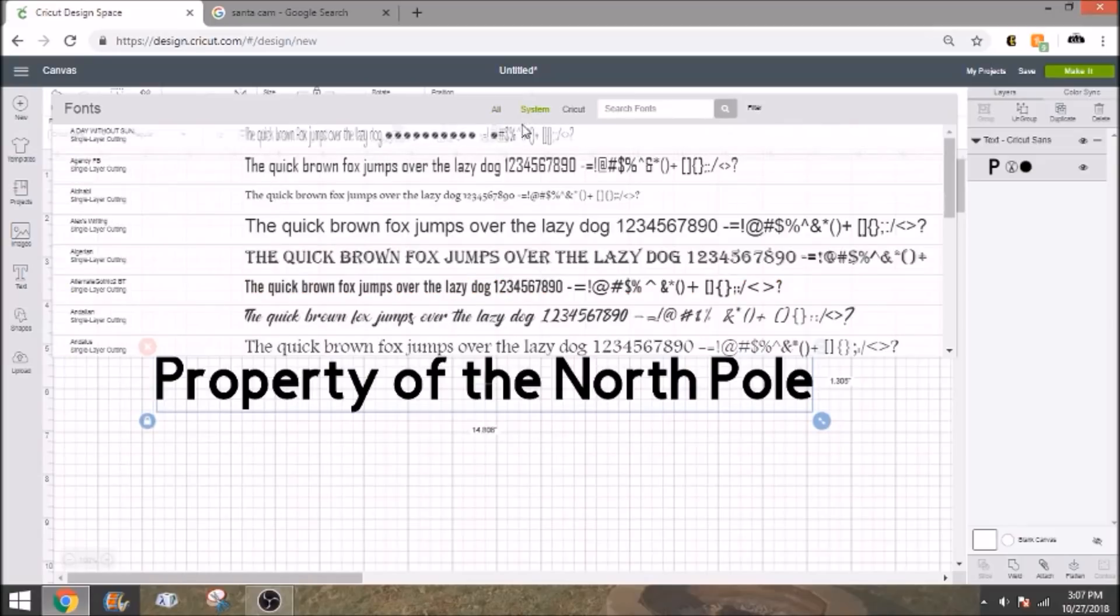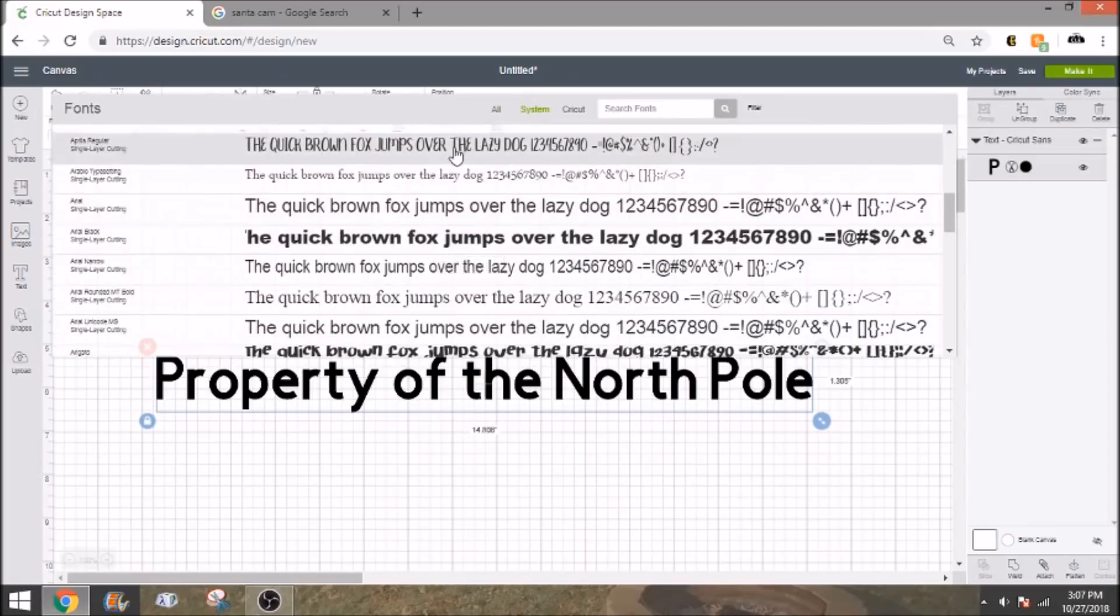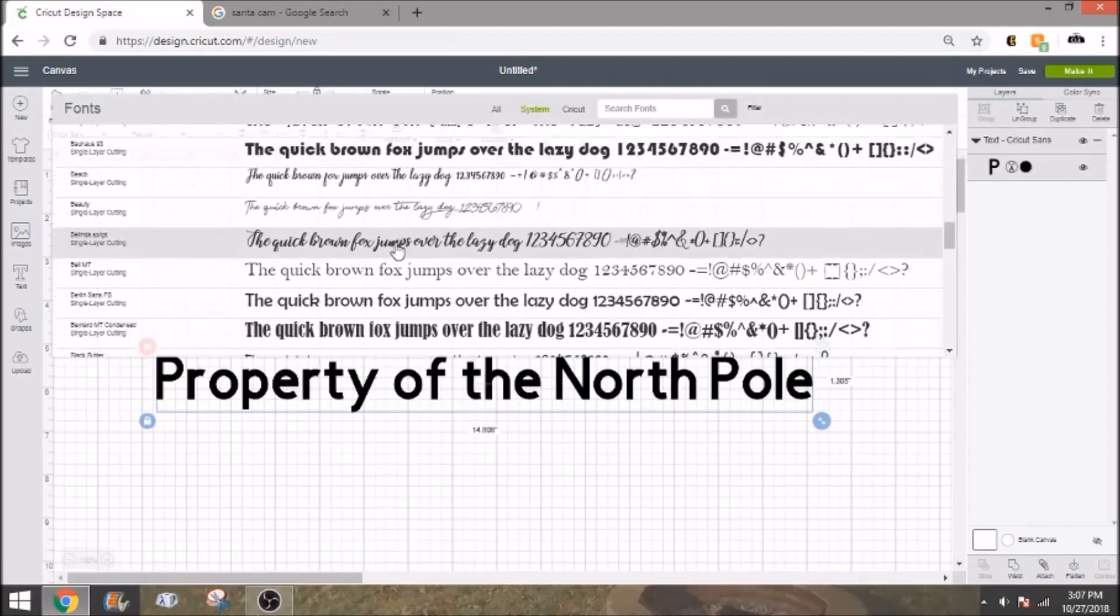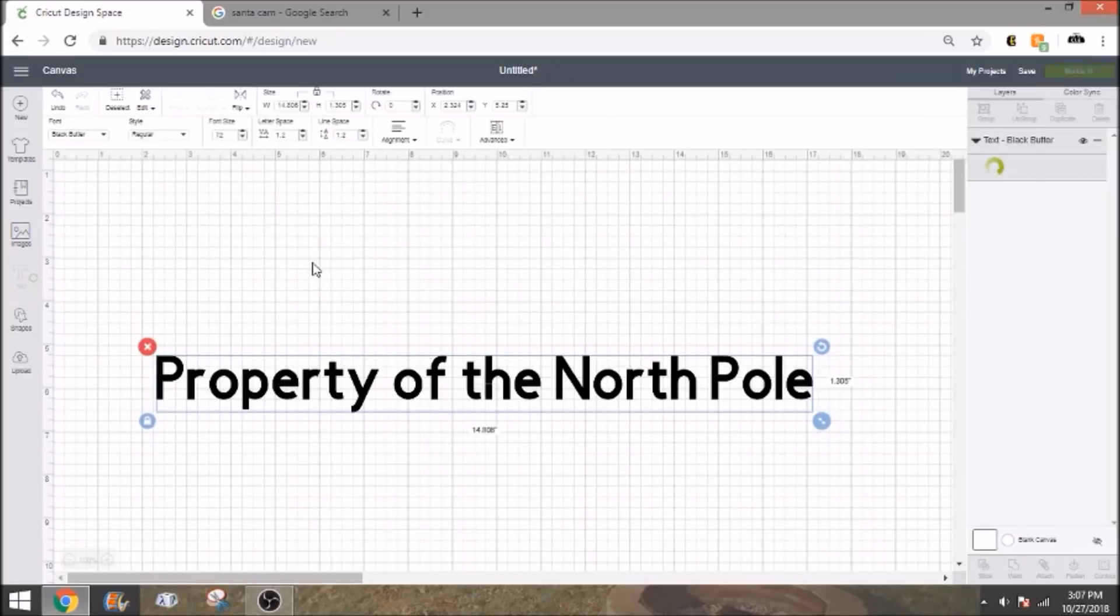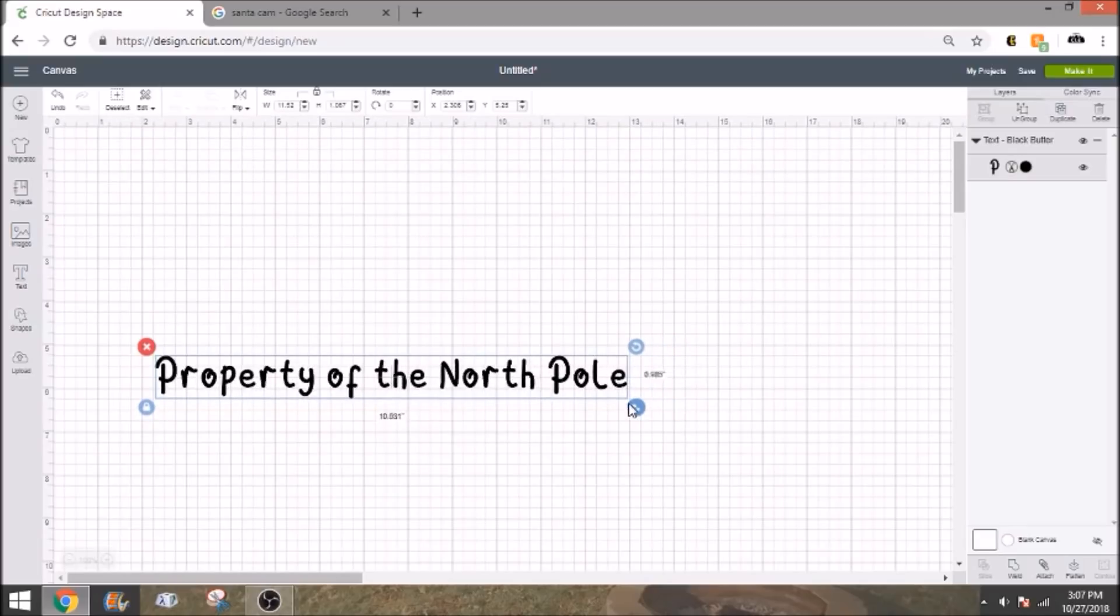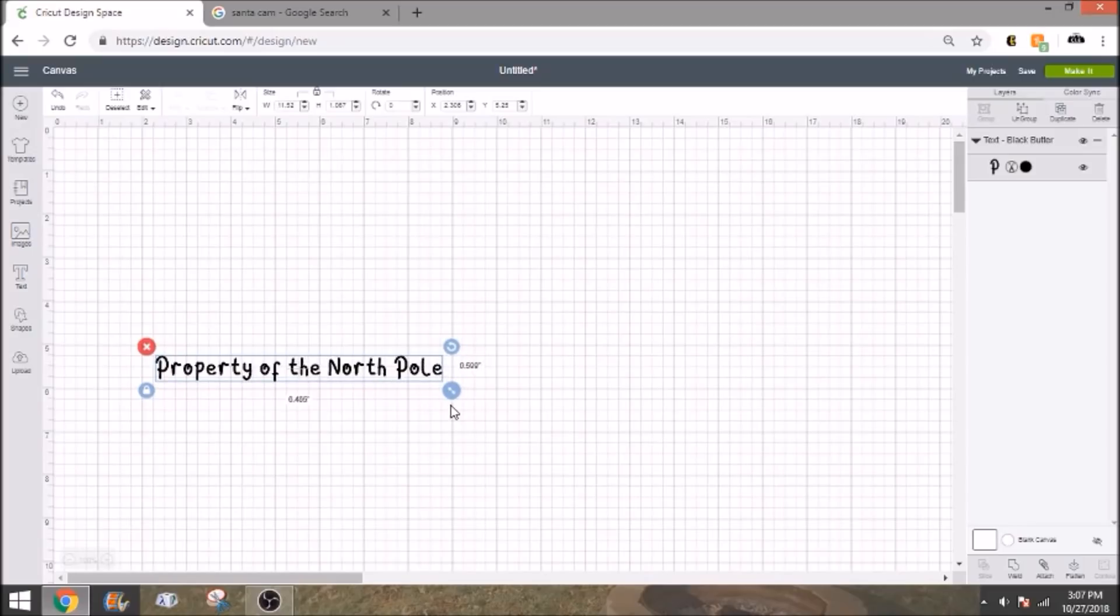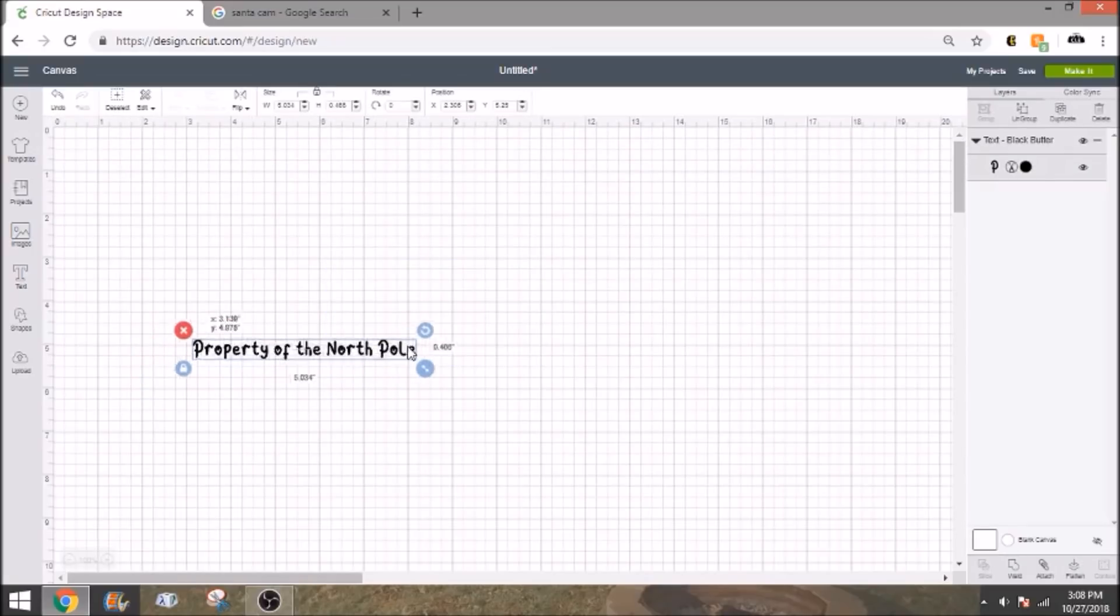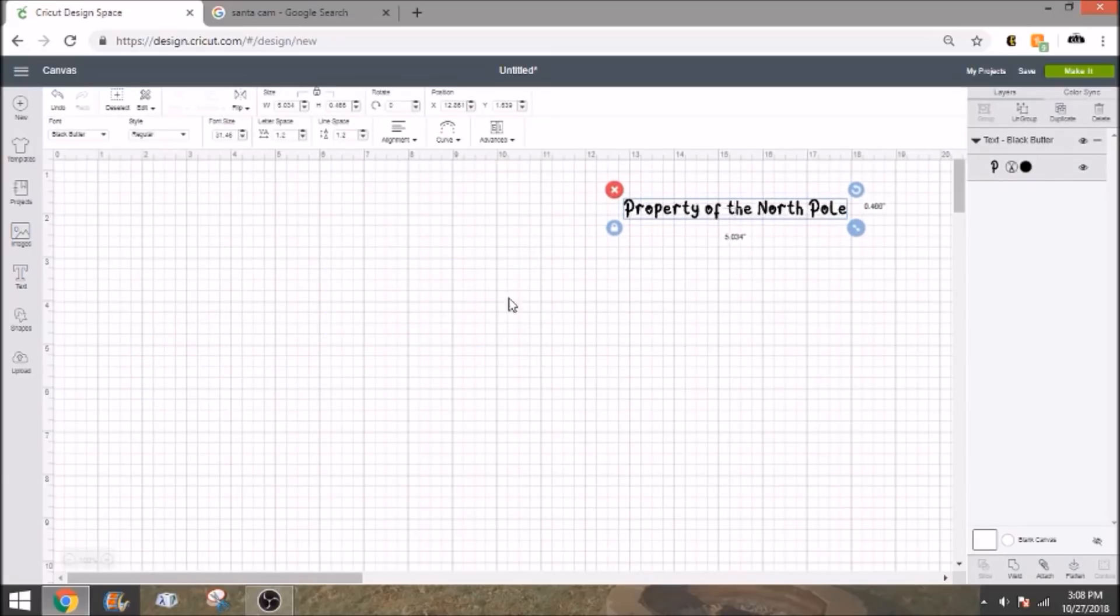So I'm going to go into my system fonts and we're going to find just something kind of fun. And one of my favorites for these kinds of projects is called Black Butter. And it's a fun, cute font. It looks really cool. I just really like it. So we're going to size it down so that it will fit. Remember, I said we got about half an inch. So we're going to size it down to about a little under half an inch. So it's going to be about five inches, which should be perfectly fine. So this is going to be our property of the North Pole. And this isn't going to stay black. I'm going to make it white, but I like to keep it black on here.